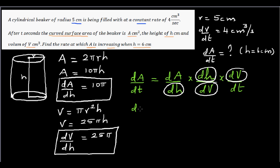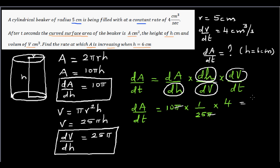Now let's substitute. dA/dt = dA/dH × dH/dV × dV/dt. dA/dH is 10π. dV/dH is 25π, so dH/dV is the reciprocal: 1/(25π). And dV/dt is 4 cm³ per second. The π terms cancel, giving 40/25. Notice the height H = 6 doesn't actually matter here — the rate at which the curved surface area is changing is not dependent on height. It is constantly changing.